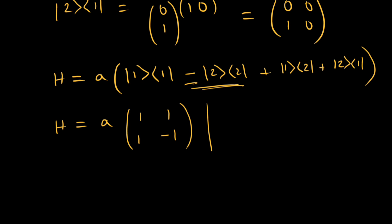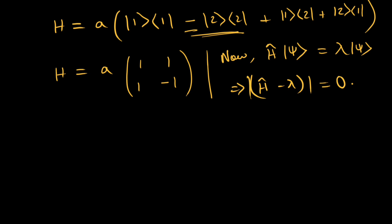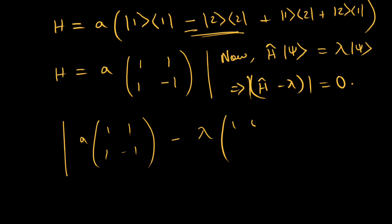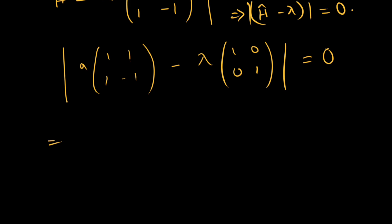This is just an eigenvalue problem. If H|ψ⟩ = λ|ψ⟩, we solve det(H − λI) = 0. The matrix H − λI is [[A−λ, A],[A, −A−λ]], and setting its determinant equal to zero gives us the characteristic equation.